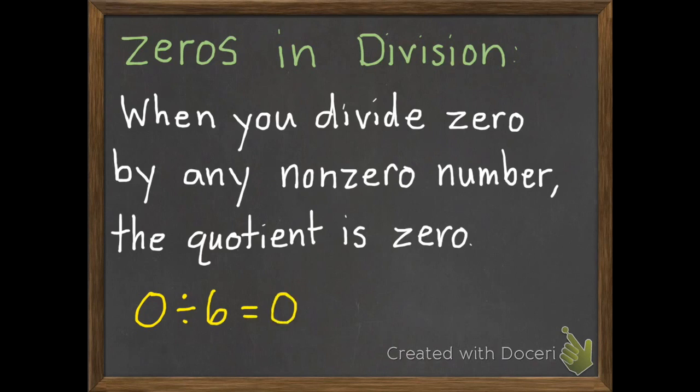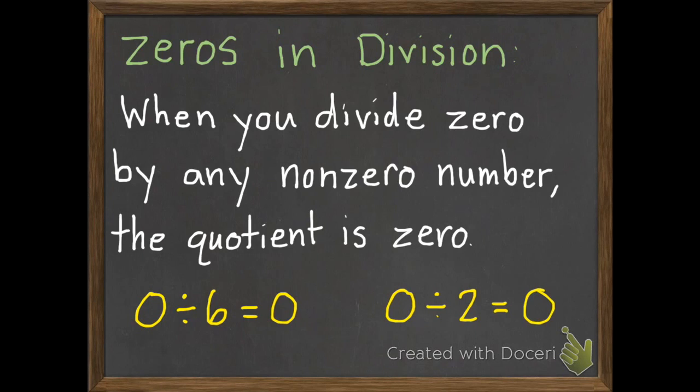So if we have 0 divided by 6, we get 0. 0 divided by 2 is 0. If we have nothing and we split it up between people, everyone gets nothing. So no matter how many groups we put nothing into, there's still nothing to give to anyone. So if we divide 0 by anything that's not 0, the quotient is 0.